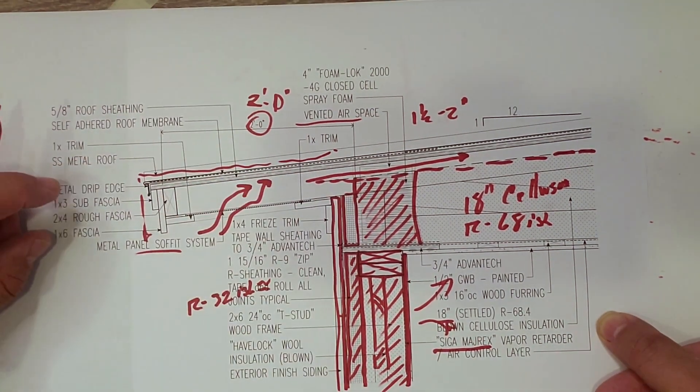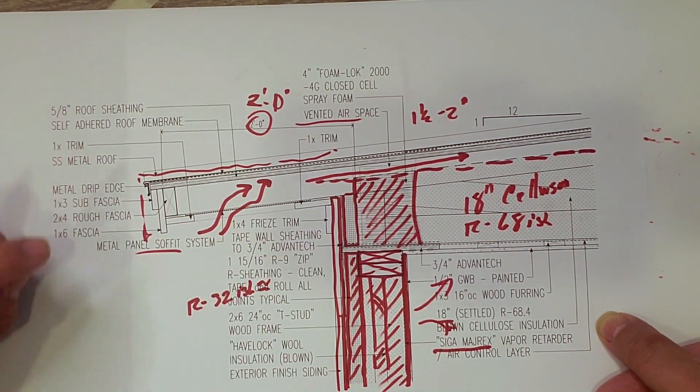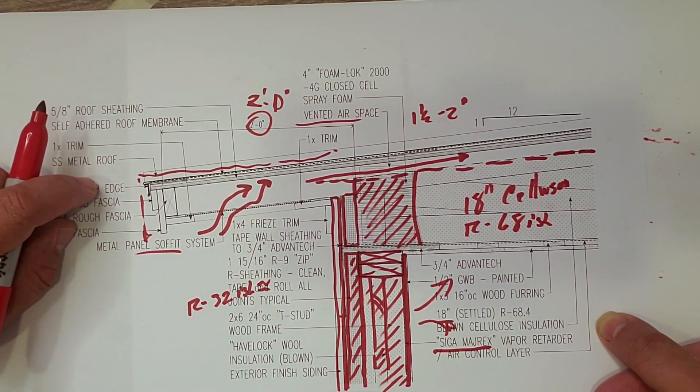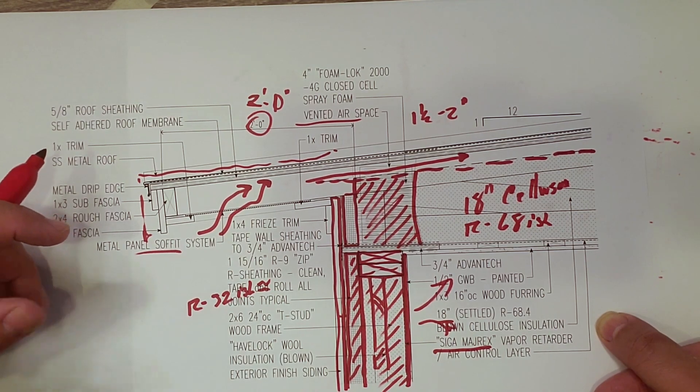Then we have roughly R7-plus windows. So it's a really good proportional take on the thermal values. But lastly, let's talk about the air barrier.